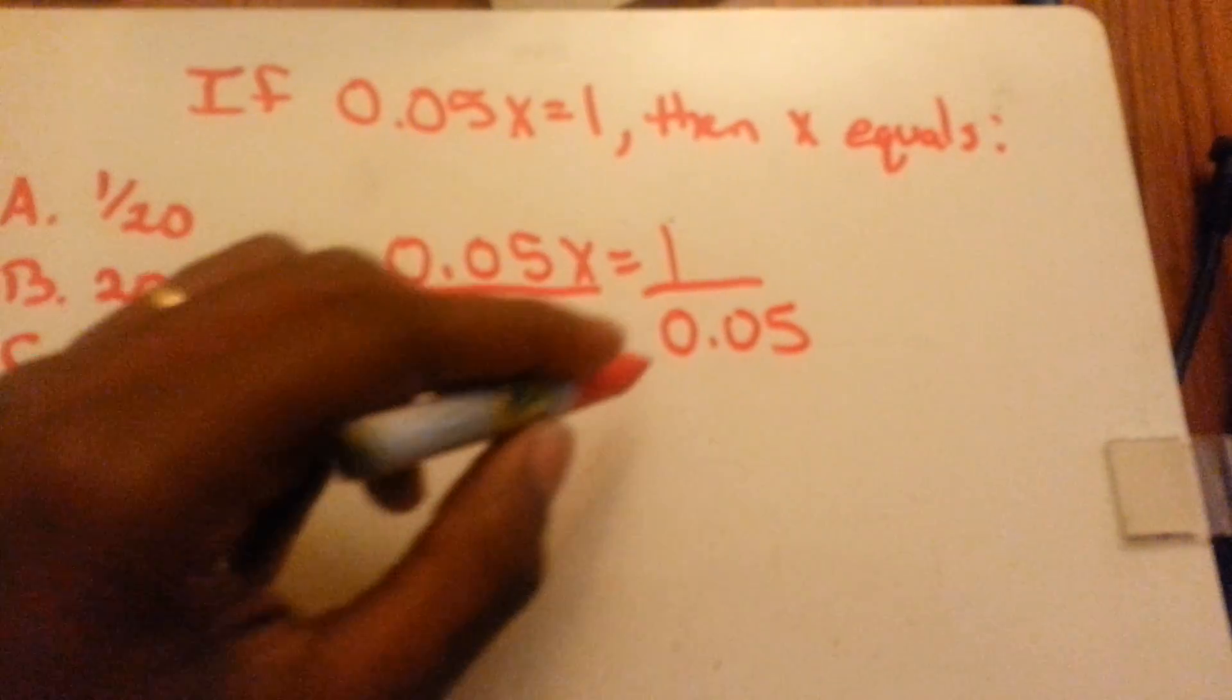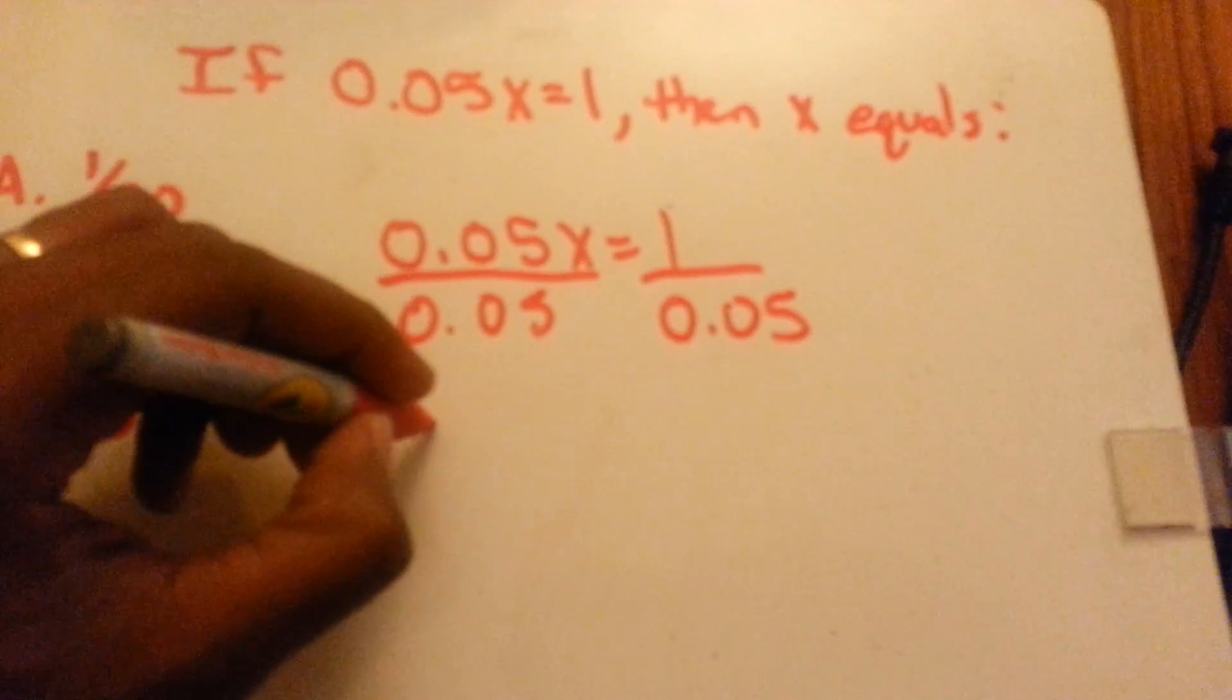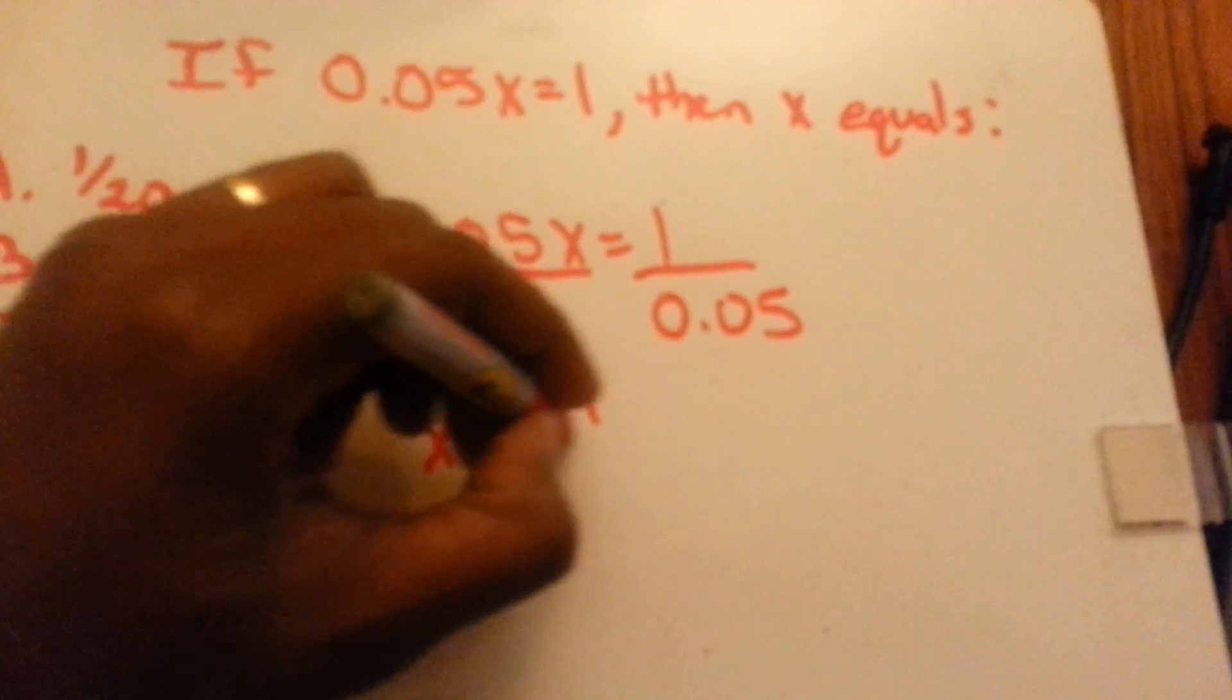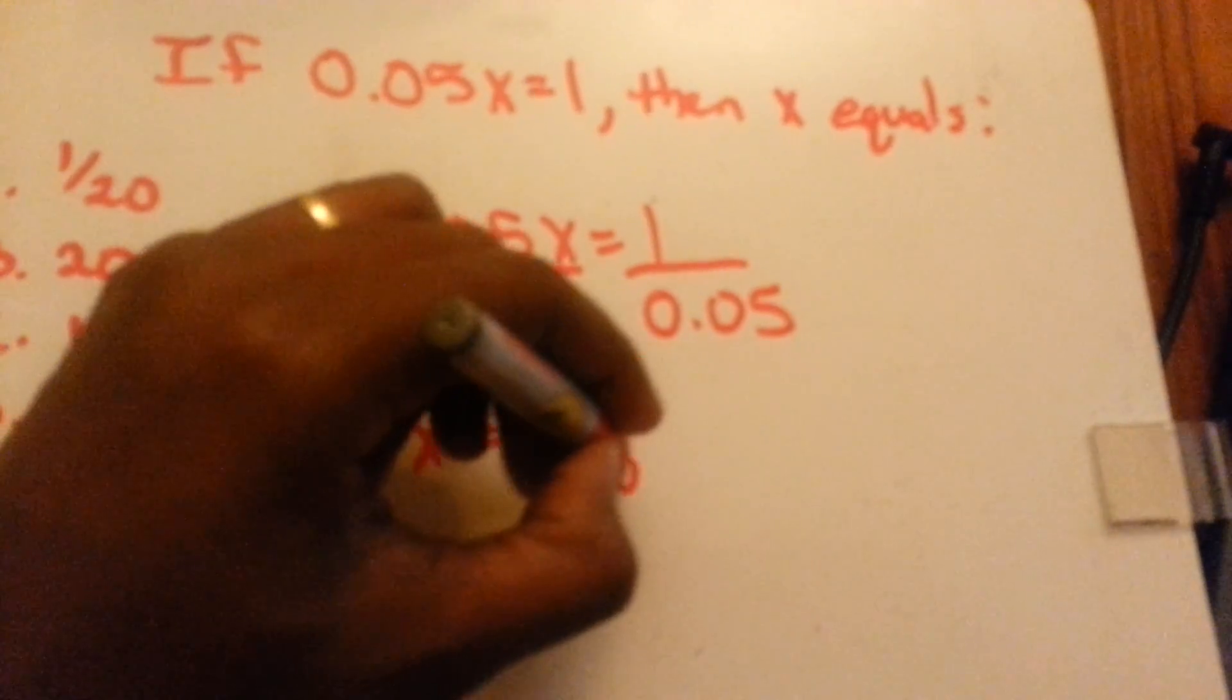We divide 0.05 on one side, we have to do the other side. So 1 divided by 0.05, x equals 1 divided by 0.05.